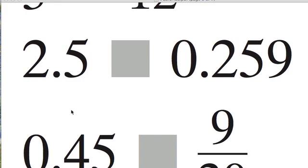Number 28 is nice and easy because we have 2.5 versus 0.259. And, well, 2.5 is over 2. It's 2 and a half. So it's 2 wholes and a half, whereas 0.259 is 0 wholes.